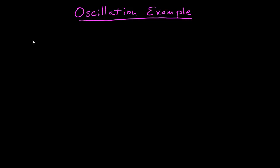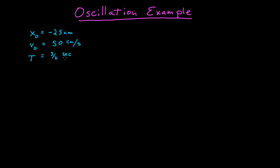In this video, I want to do an example of finding oscillatory motion. We have a system that has an initial position of negative 27.5 centimeters towards the negative x-axis, an initial velocity equal to 50 centimeters per second, and a period of 3/2 seconds.